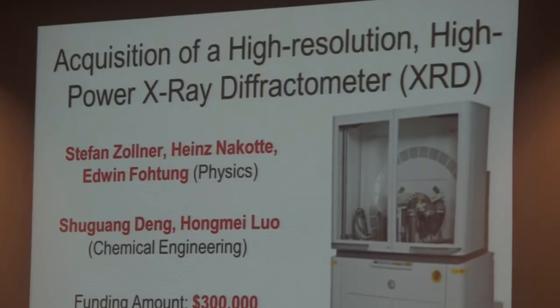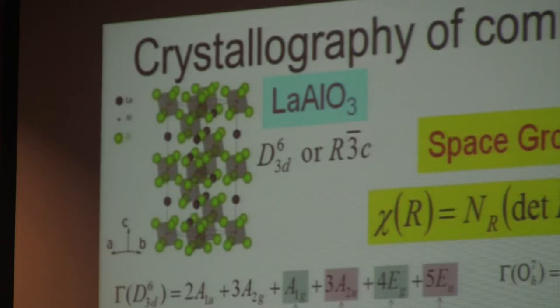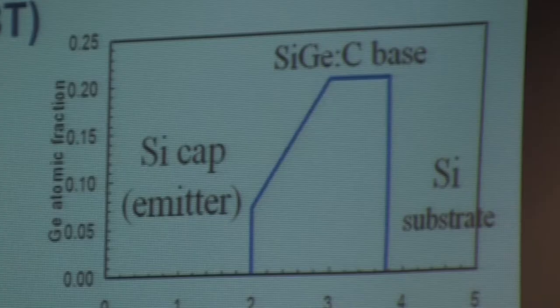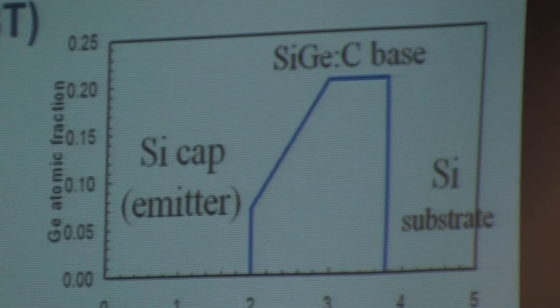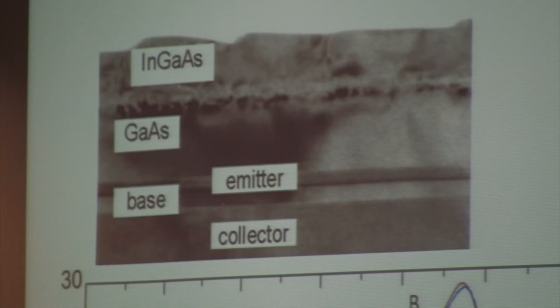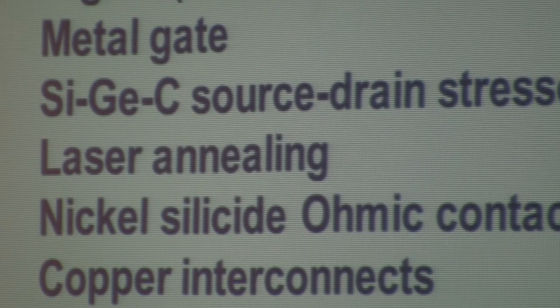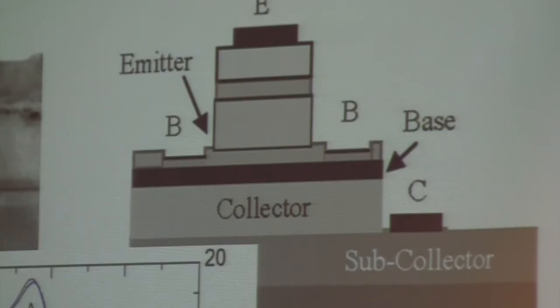This X-ray diffractometer can measure distances between atoms. It can measure bond angles and it can measure the lengths of crystal structures and the angles of crystals. It can also measure film thicknesses and it can be applied to a broad range of materials: semiconductors, metals, oxides.